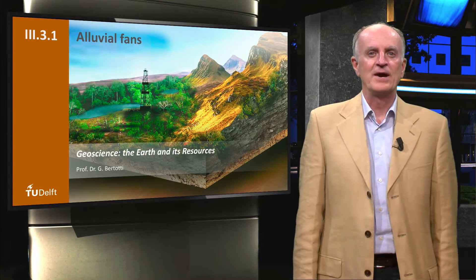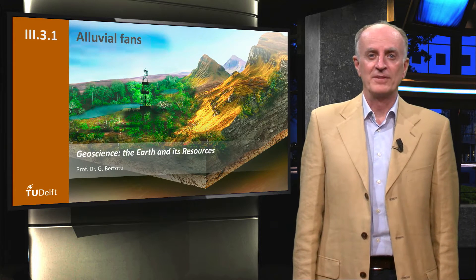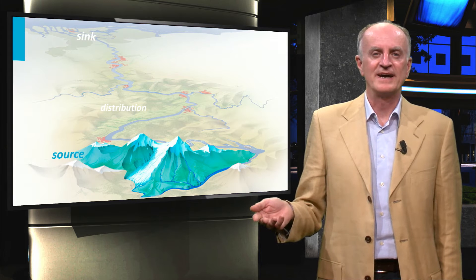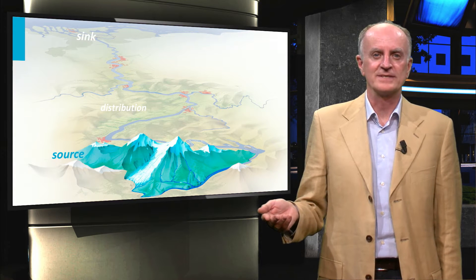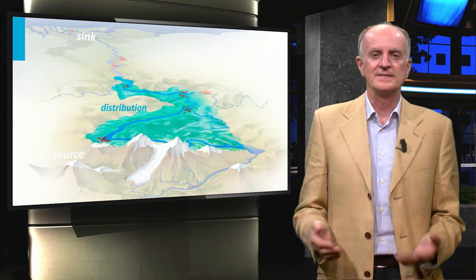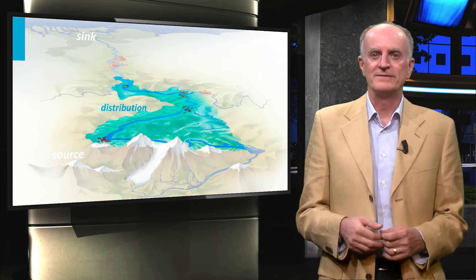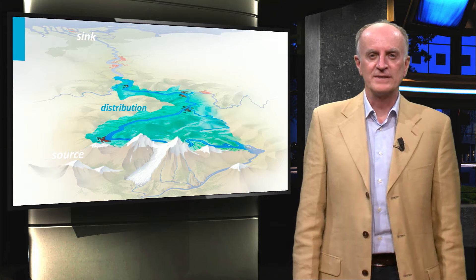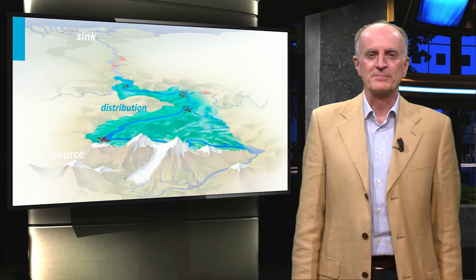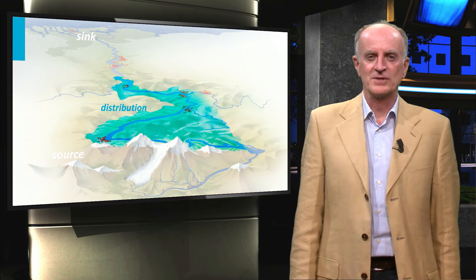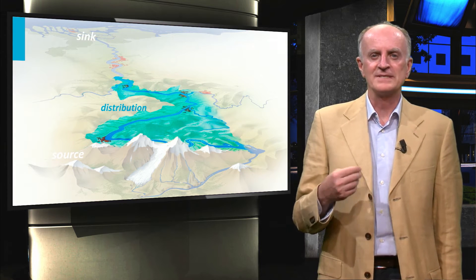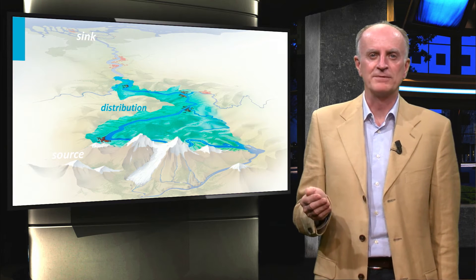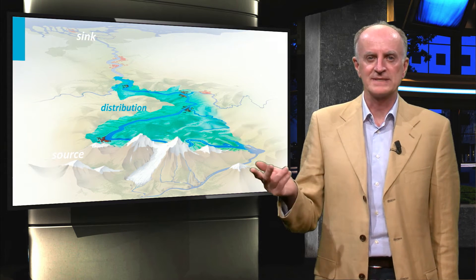The sediments are now piled up on the flank of the mountain and ready to be transported towards the final destination, the sea. This is the distributary component of our source-to-sink system. Using the theoretical knowledge gathered in previous models, we will follow the path of these sediments and discuss the changes they experienced during this trip down to the sink.